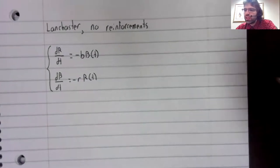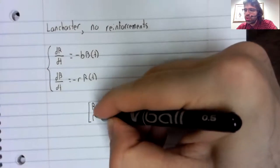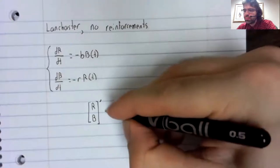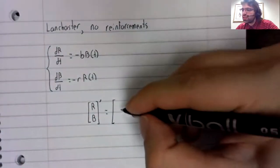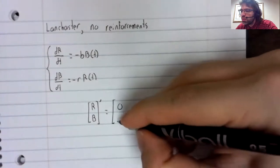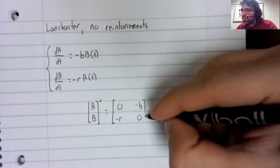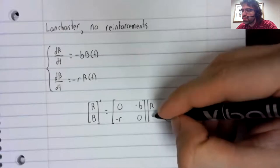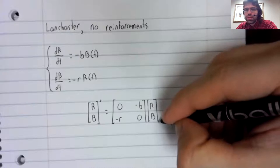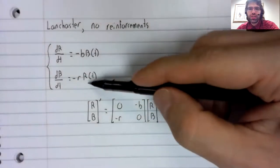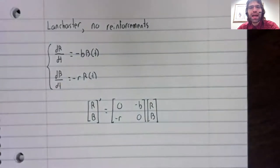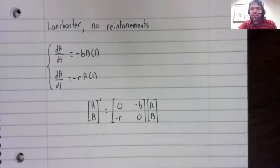This is linear and homogeneous. We can rewrite it as so. And the origin is a fixed point. If R and B are both zero, this turns to zero and this turns to zero. Capital R and capital B, I should say. And we can analyze the fixed point using that matrix.